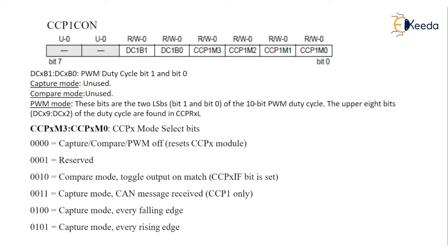The other two registers are CCPRxL and CCPRxH — the low and high bytes of a 16-bit register. These 16-bit registers can be used either as a 16-bit compare register, a 16-bit capture register, or as an 8-bit duty cycle register for PWM, but we cannot use all of them together.